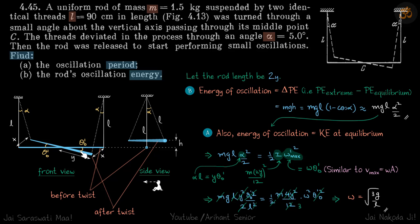If the angle turned by the rod is theta, then let's say the rod's angular velocity will be omega dash, and its maximum angular velocity at equilibrium will be omega dash max, which is equal to omega into theta naught dash.